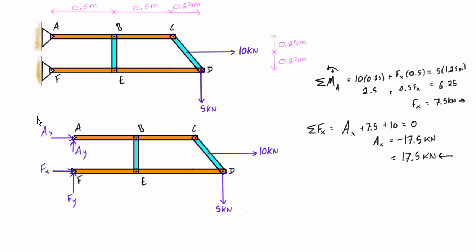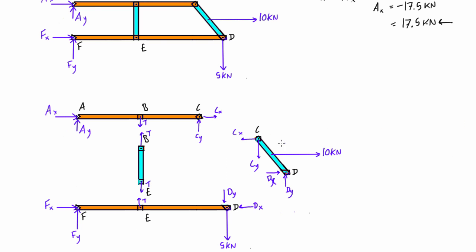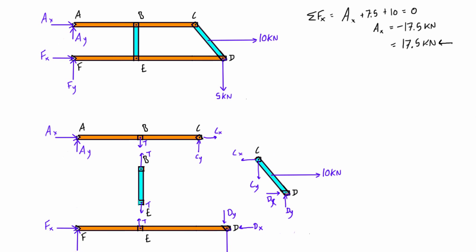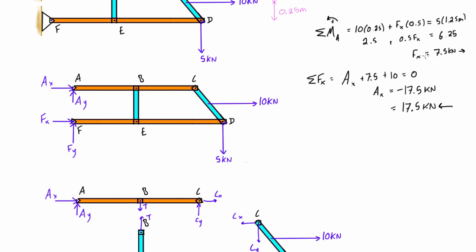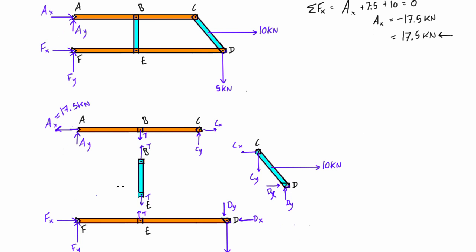Now we draw the exploded diagram, which breaks out all the members and their free body diagrams. In total we have nine unknowns: AX, AY, FX, FY, T, CX, CY, DX, and DY. We already calculated FX and AX. AX is actually going the opposite way at 17.5 kilonewtons, and FX is 7.5 kilonewtons to the right. So really there are only seven unknowns remaining.